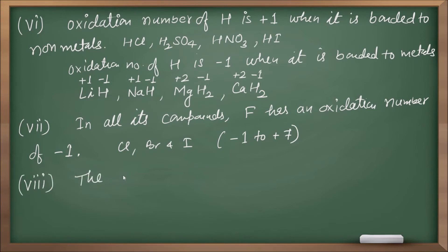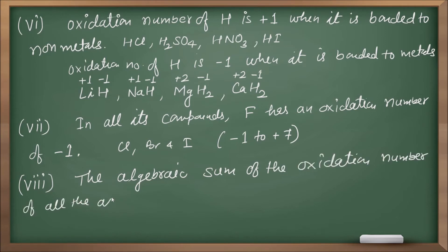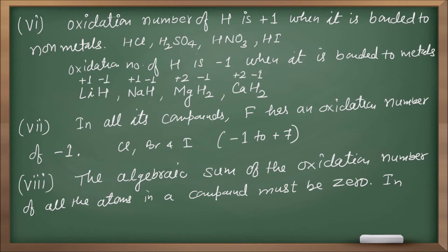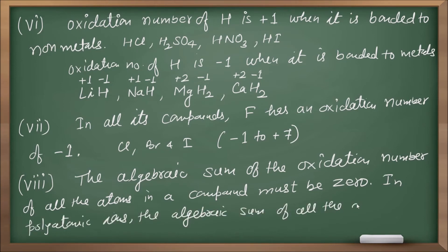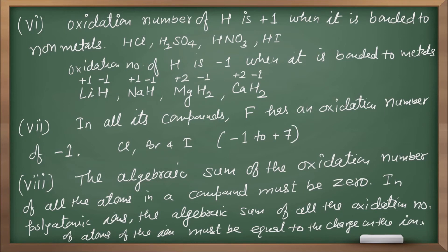Rule number eight: the algebraic sum of the oxidation numbers of all the atoms in a compound must be zero. For a neutral molecule, the algebraic sum equals zero. For polyatomic ions, the algebraic sum of all the oxidation numbers must be equal to the charge on the ion. By applying these rules, we can calculate the oxidation number of any atom in a compound.